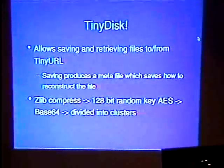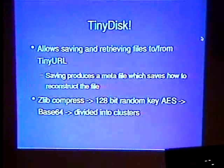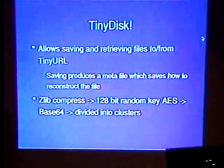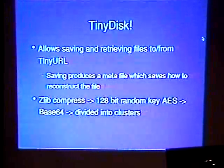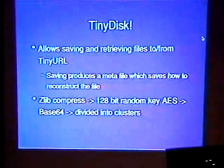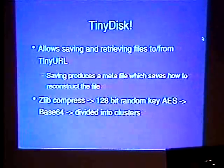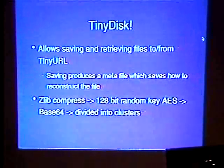TinyDisc — this allows saving and retrieving files from TinyURL. The saving procedure produces a metafile. Think of it like a file system — you've got the FAT, which basically says: if you want this file, here are the clusters where it is. We can't store the FAT inside the TinyURL file system, we have to store it externally. When you want a file, you give it your little ticket — it tells you what the name was, what it was encrypted with, and where it's stored, so you can retrieve it.